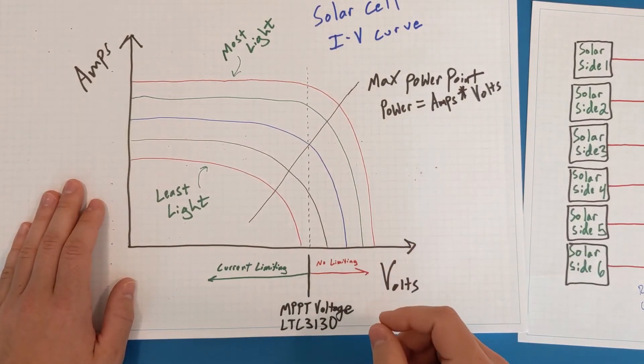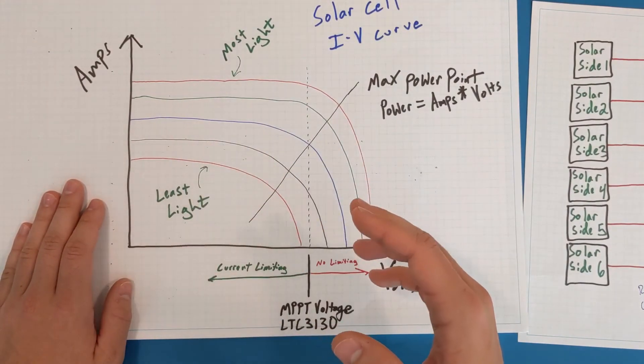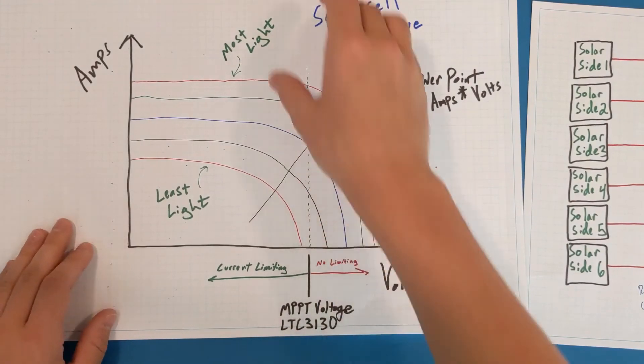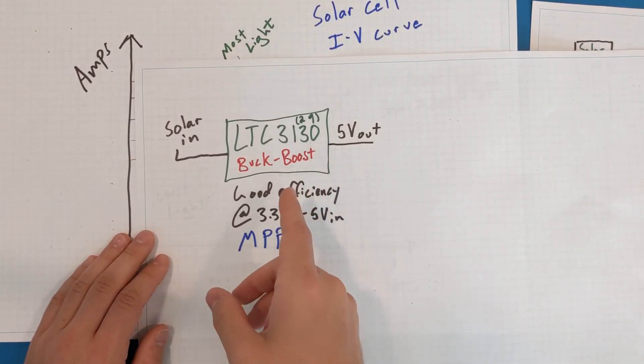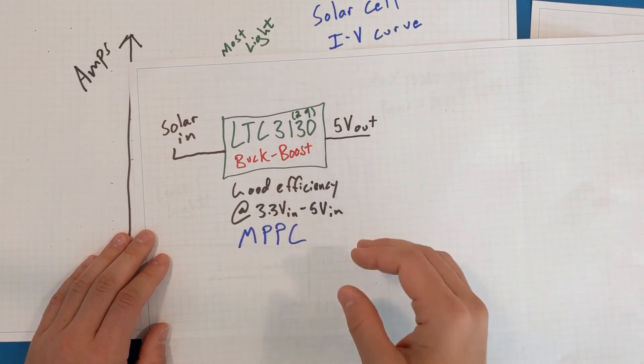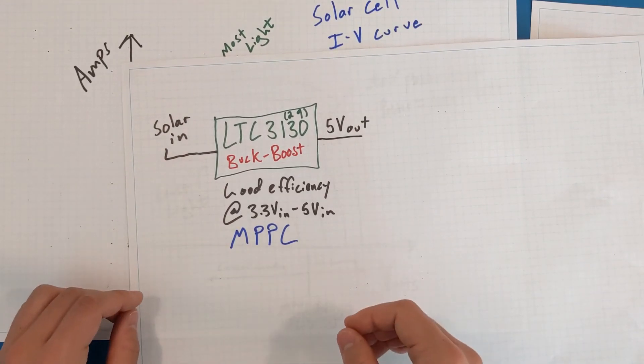However, I couldn't quite find something that I wanted. I found some chips that did that scanning. However, they were explicitly battery chargers. This LTC3130, this chip, it isn't a battery charger. It just creates a voltage output, which I really like, because then I can use a separate battery charger that has more of the functions that I want.